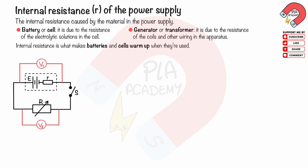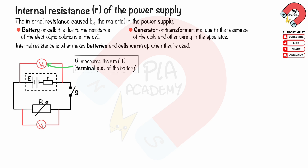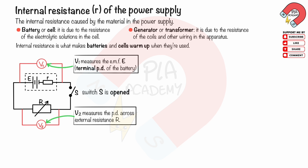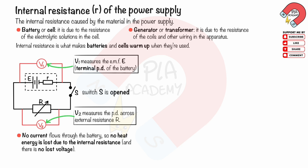Consider a battery of EMF E and internal resistance r connected in series with the external resistance R and switch S, as shown. The voltmeter V1 measures the EMF E, or terminal PD, of the battery. The voltmeter V2 measures the PD across the external resistance R. As the switch S is opened, no current flows through the battery, so no heat energy is lost due to the internal resistance and there is no lost voltage. The voltmeter V1 is now equal to the EMF E of the battery, and V2 is zero because no current flows through the circuit.